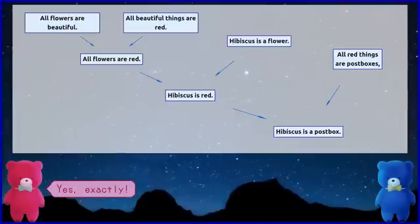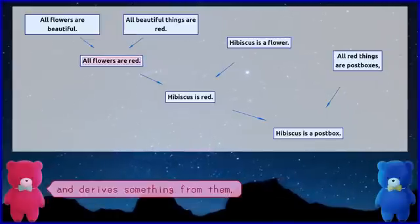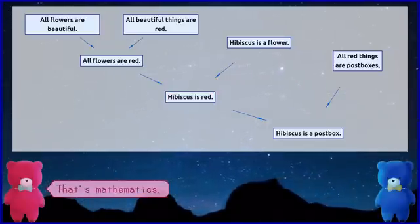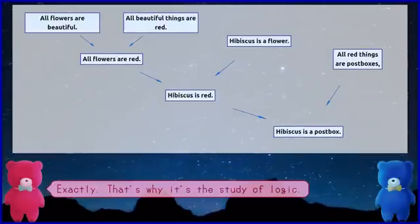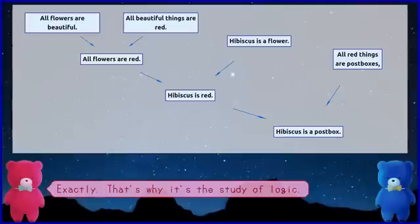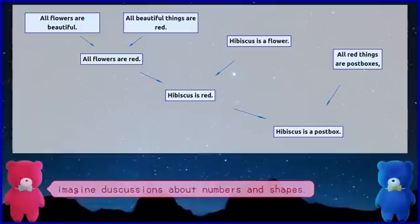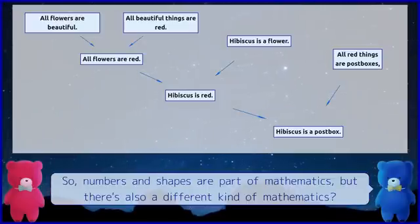Yes, exactly. Mathematics determines its foundational assumptions called axioms, and derives something from them, and then derives more from the previous derivations. That's mathematics. So, completing an axiomatic system is what mathematics is all about. Exactly, that's why it's the study of logic. Many people, when they hear the word mathematics, imagine discussions about numbers and shapes. But to put it very simply, those discussions are within their own respective axiomatic systems. So numbers and shapes are part of mathematics, but there's also a different kind of mathematics.